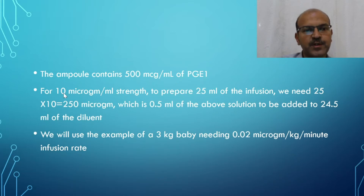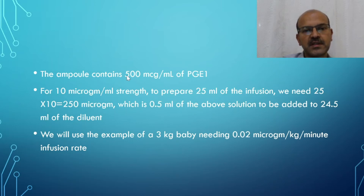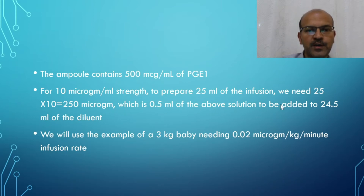For a 10 microgram per ml strength and preparing 25 ml of infusion, you multiply 10 by 25, which gives 250 microgram. Since the ampoule strength is 500 microgram per ml, we need 0.5 ml of the ampoule solution added to 24.5 ml of saline or any diluent used.